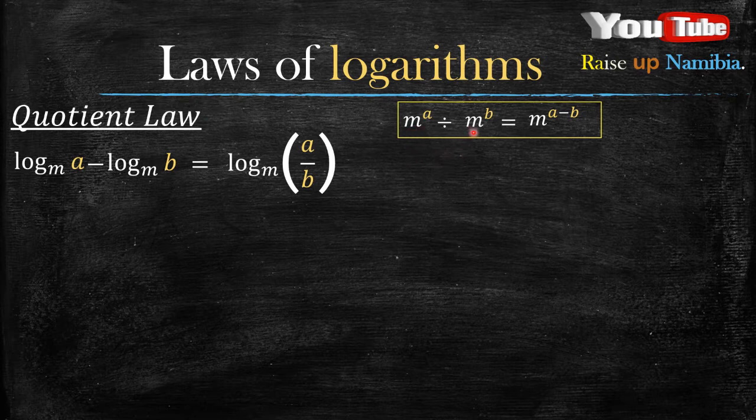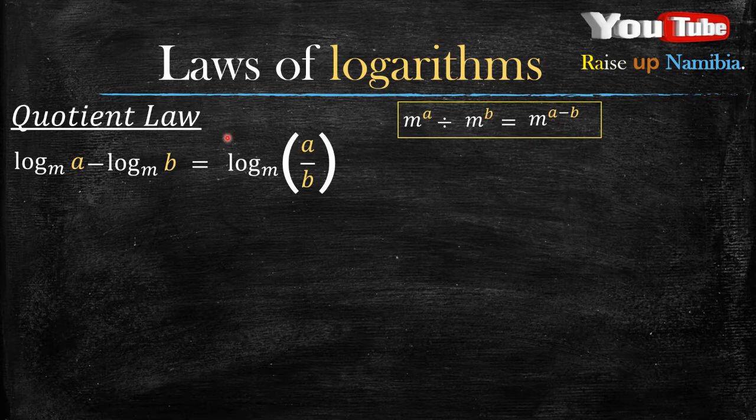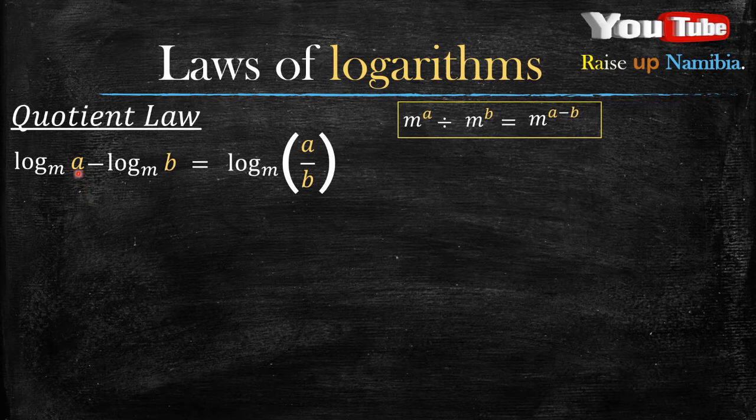Remember from the exponents we had this division law, whereby if your bases are the same, you subtract the exponents. Now, if you take a close look, these two laws are actually related, but it's just like reversed. What do I mean by this? Check: in our quotient law, it's like the subtraction comes first.